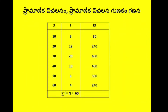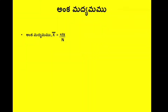So 80 plus 240 plus 600 plus 400 plus 300 plus 240 is equal to 1860. Sigma fx is equal to 1860. The mean is equal to sigma fx by n, which is 1860 divided by 60, which equals 31.